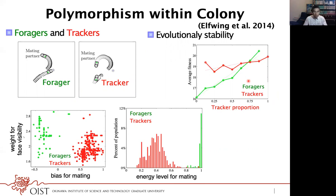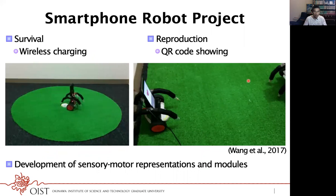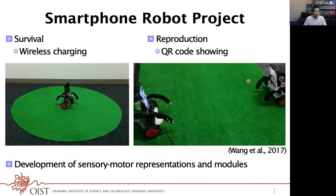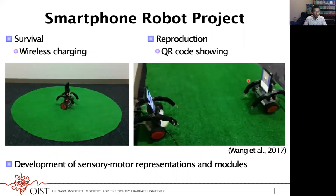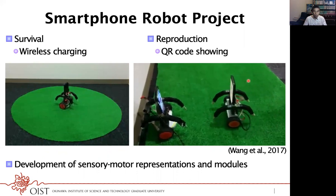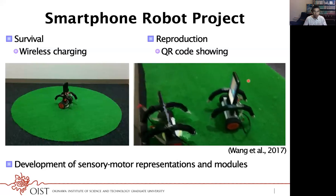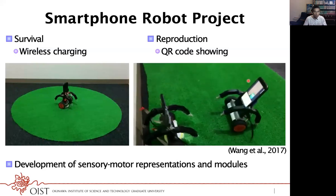Unfortunately, these robots became too old, but now we are building a new generation of robots using a smartphone as their brain — with survival by going to a charging station and reproduction by showing a genetic code via QR code. This is our ongoing development.